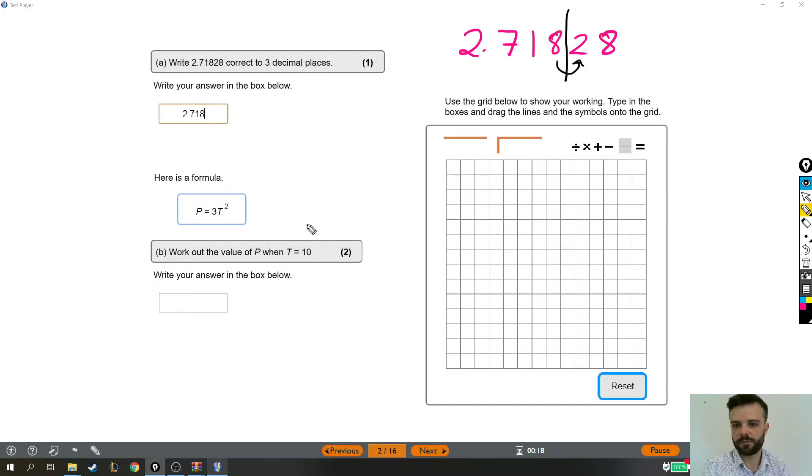Part B is completely different. It's asking us to substitute into a formula. So here is a formula that we've got here. Work out the value of P when T equals 10. So essentially, we're just going to replace the T with a 10. But some important things to remember.